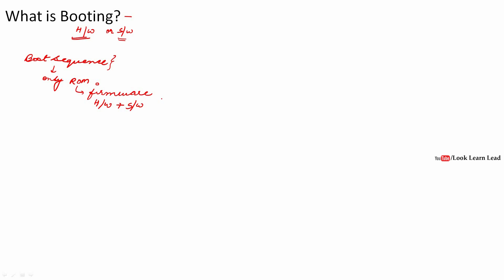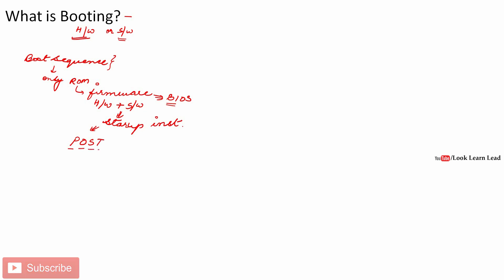In the ROM, the firmware is stored. Generally, the firmware is referred to as BIOS — Basic Input Output System. So BIOS is a firmware; you have to remember that. Now, what does this firmware contain? It contains the startup instructions. The BIOS would then perform POST — that is, Power On Self Test — which is done by the BIOS only.